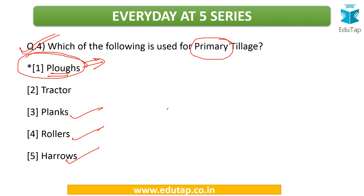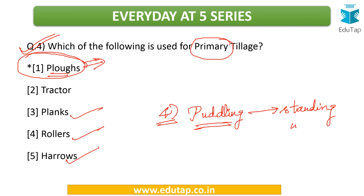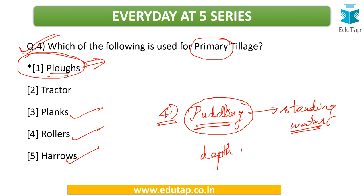The fourth question for you to attempt is about puddling — a special purpose tillage operation done in standing water, used for rice cultivation. You need to tell me what is the depth of water that is generally considered ideal when doing this puddling operation. When you start researching these questions, many of your concepts will start getting clear.